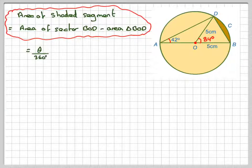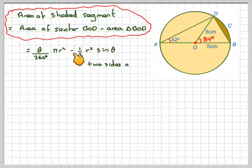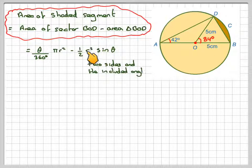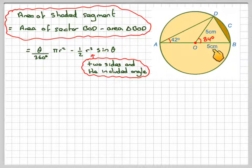That will be angle over 360 times the area of the circle, which is π r squared, minus a half r squared sin θ.